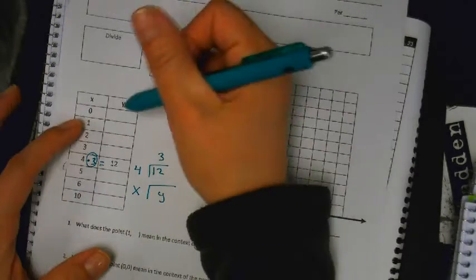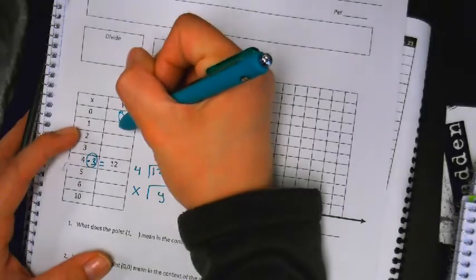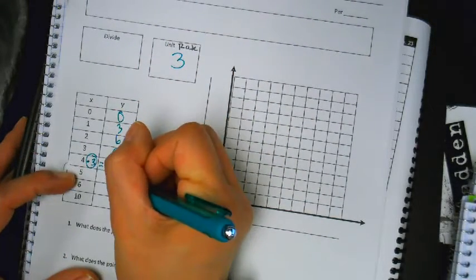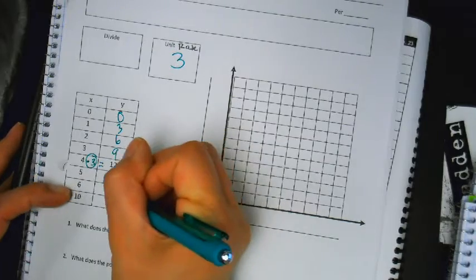So what goes next to the 0? 0. 1? 3. 2? 6. 3? 9. 5? 15. 6? 18. 10? 30.